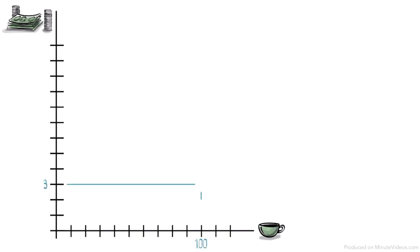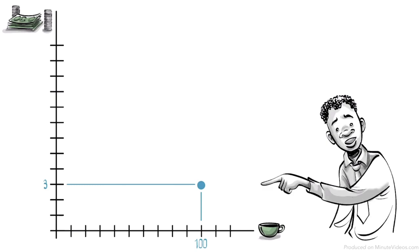We can illustrate this with a diagram showing the price per cup of coffee on the vertical axis and the number of cups of coffee consumed on the horizontal axis. At $3, 100 cups are demanded.